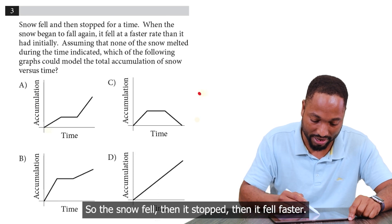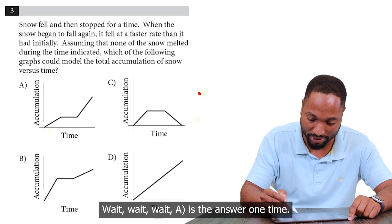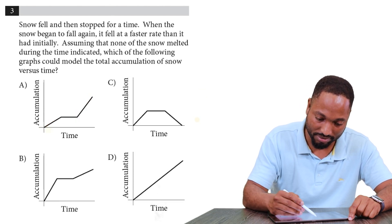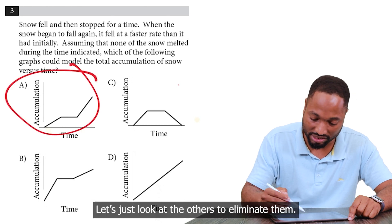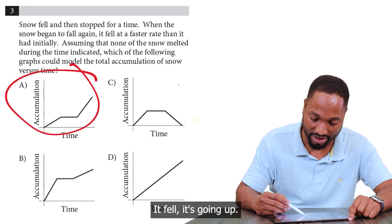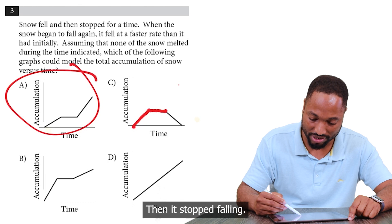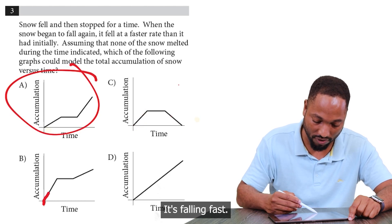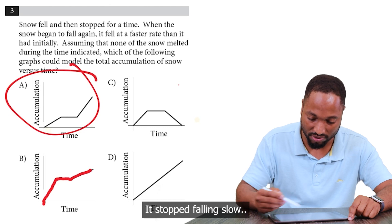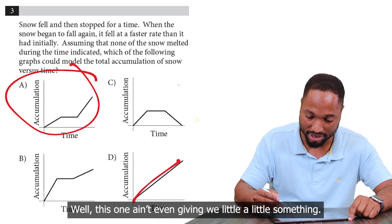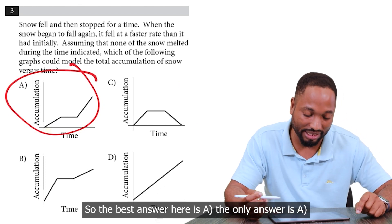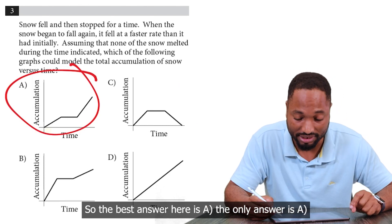So the snow fell. Then it stopped. Then it fell faster. Here's the answer one time. Let's just look at the others to eliminate them. It fell, it's going up. Then it stopped falling. Then the snow melted because they are... No, that's not making sense. It's falling fast. It stopped falling slow. That's not making sense. Well, this one even gave me a little something. So the best answer here is A. The only answer is A.